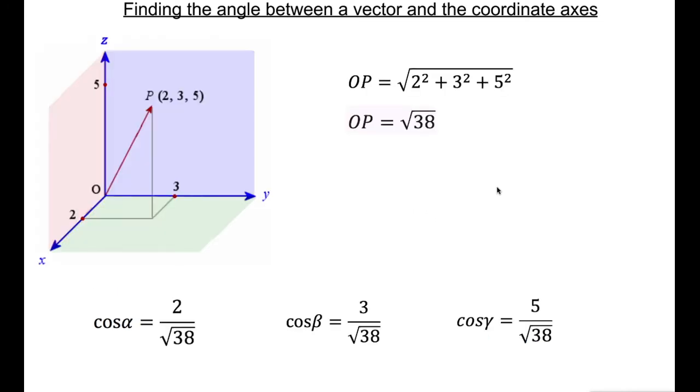I've just got a short example to show you leading on from that. So here's a vector op, the coordinates of 2, 3, 5 for point P. So the vector op would be 2i plus 3j plus 5k.